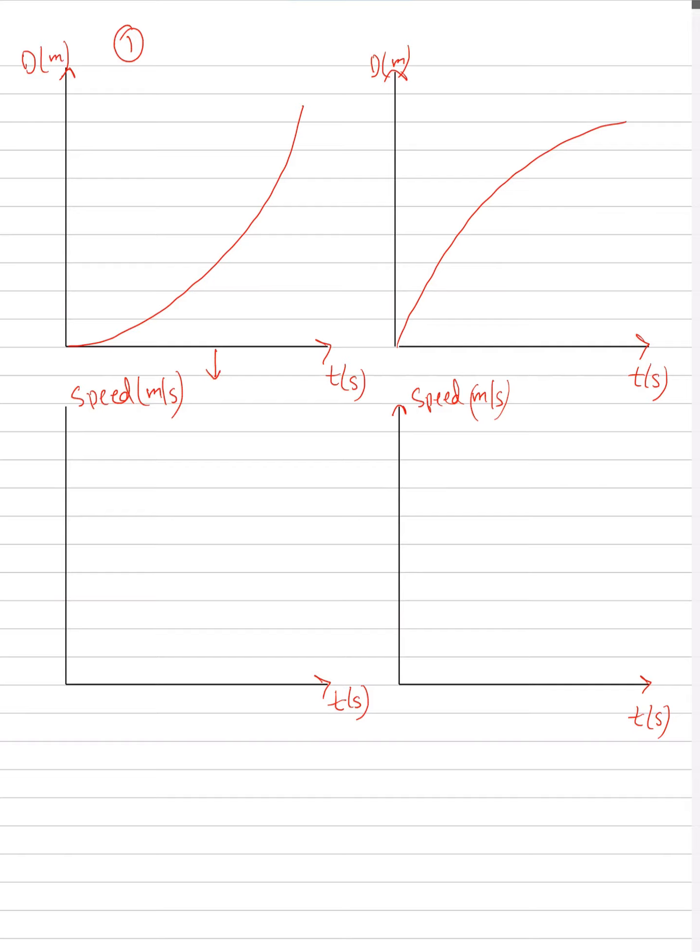First, let's understand this distance-time graph. Basically, our distance is increasing. In fact, our distance is increasing, but the rate of increase is different in both cases.